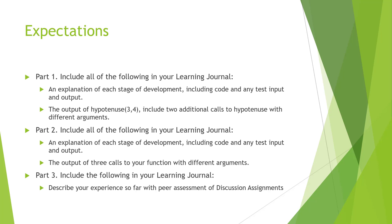So again, expectations. Part 1: I want a function that takes two variables, does a hypotenuse calculation, and returns the result. I also want two additional examples with different numbers. Use incremental development structure, meaning document as you go so we can see the development of the code. Part 2: include an explanation of each stage of development, including the code and any test input and output that you use, plus the output of three calls to your function with different arguments so we can verify what's going on.